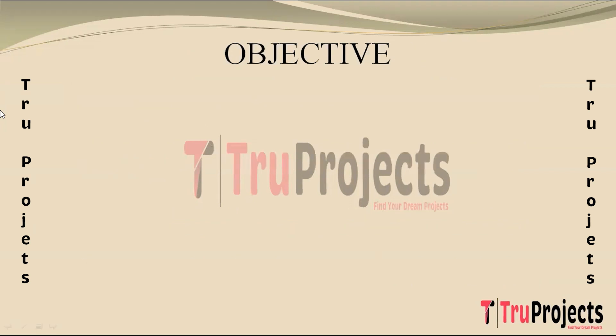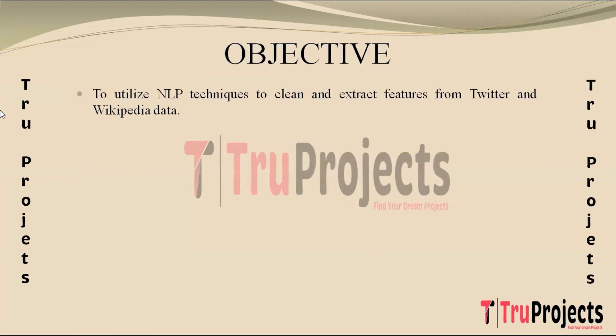Objectives of the project. The first objective is to utilize NLP techniques for pre-processing and feature extraction from Twitter and Wikipedia data to enable effective analysis and classification of cyber harassment instances, ensuring that text data is cleaned, tokenized and transformed into numerical representations, facilitating further analysis by machine learning algorithms.